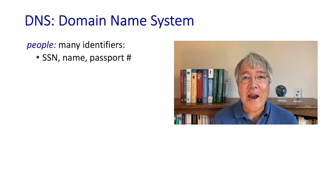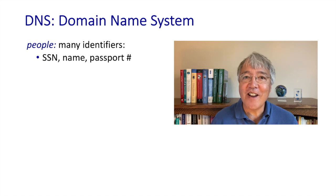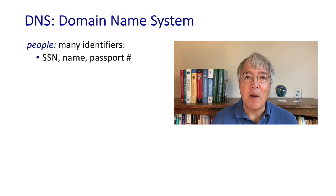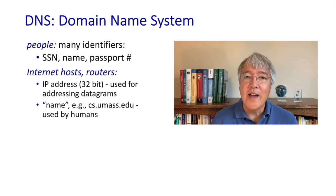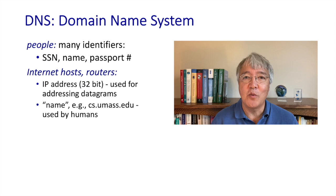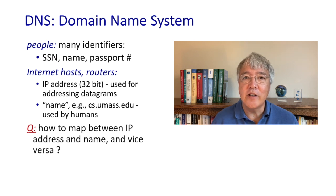As the name 'domain name system' would imply, the DNS is all about names and identifiers. As a person, I have many identifiers associated with me: my name, my social security number, my passport ID, my UMass employee ID. Internet hosts also have at least two identifiers — a name like gaia.cs.umass.edu, and an IP address like 128.119.40.186. The role of the DNS is to provide translation between names and IP addresses.